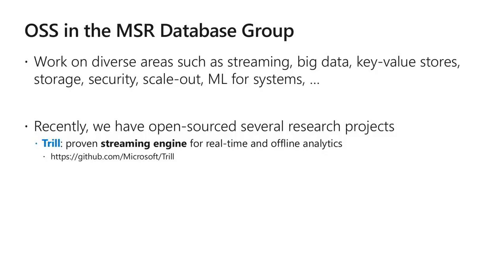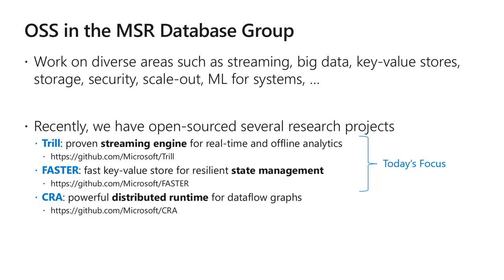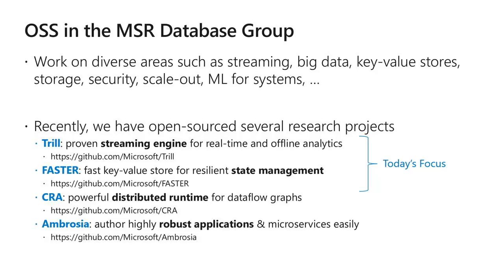The first project is Trill, a proven streaming engine built here in the database group, now part of the Cloud Enterprise organization. It's a streaming engine for real-time and offline analytics. The next piece is FASTER, a fast key-value store for resilient state management, built over the last couple of years. We've also open-sourced CRA — Common Runtime for Applications — a powerful distributed runtime for data flow graphs, and Ambrosia, a highly robust actor-based framework for microservices.